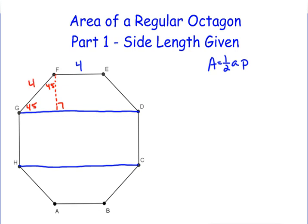We know that GF is 4 because it's a side length which means we can find the altitude by dividing by root 2 because of our 45-45-90 degree triangle rule. And when you simplify that you end up with 2 root 2. So that height is 2 root 2.